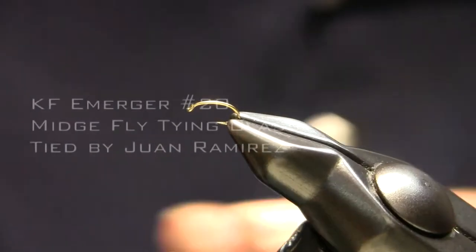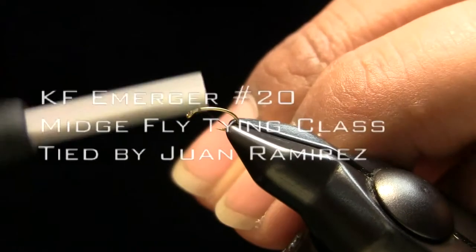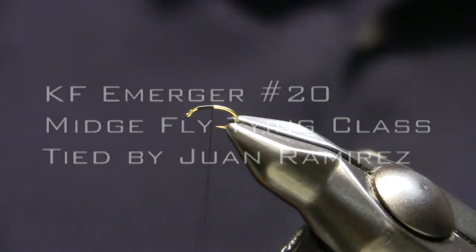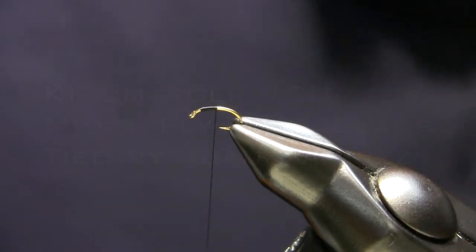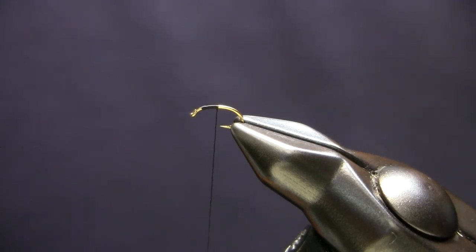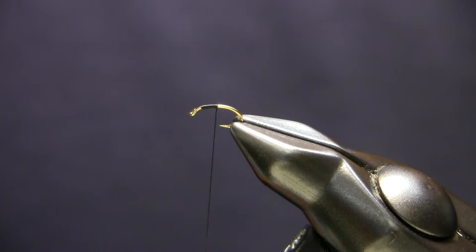All right, so this is the KF Emerger, Crystal Flash Emerger. This one's a size 20. So what I want to do is just add a little bit of copper wire.